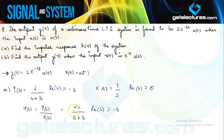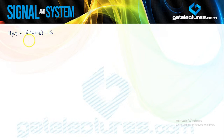Since we have obtained H(s), we can now obtain h(t) by performing the inverse Laplace transformation. If you look at this expression carefully you see that this is an improper rational function because the degree of the numerator and denominator is the same. So we first convert it: I can write H(s) as 2*(s+3) - 6, all over (s+3), which gives 2 - 6/(s+3).